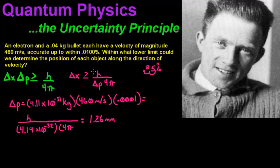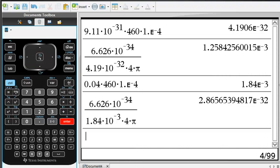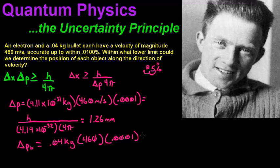Now let's do this bullet. So we have got the delta P of the bullet. It is going to equal your mass, which is 0.04 kilograms times 460 times 0.0001, and we get 1.84 times 10 to the negative 3rd.